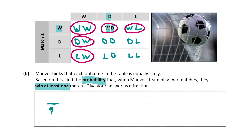So there are five possibilities of them winning at least one match, giving us five over nine. The probability that Maeve's team win at least one match when playing two matches is five over nine. For questions A and B combined you're going to get a total of 15 marks.